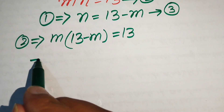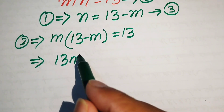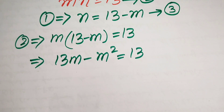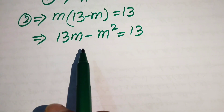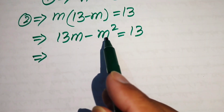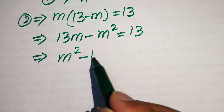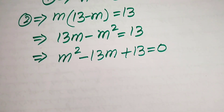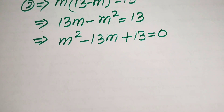We multiply m through both terms to get 13m minus m squared equals 13. This is quadratic but not in standard form, so we rearrange all terms to one side: m squared minus 13m plus 13 equals 0. Now we have the quadratic equation in standard form and will solve it using the quadratic formula.